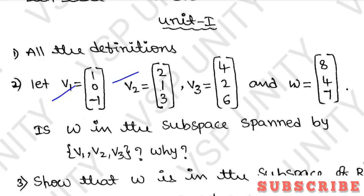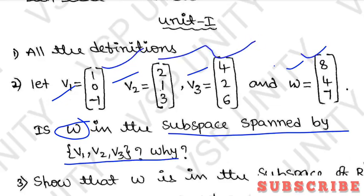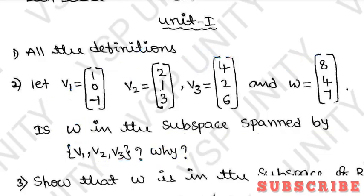First question: given v1, v2, v3 and w, we have to write w in the subspace spanned by v1, v2, v3. We have a method to find the subspace spanned by v1, v2, v3, and we have to write some reasoning for that. We will discuss each and every question given in this video, and I will make a separate video for each question.